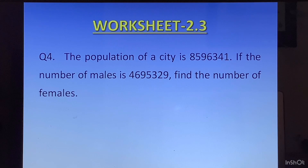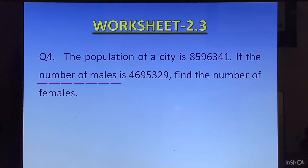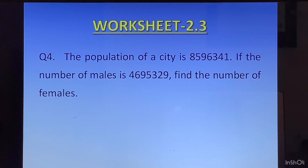Question 4: The population of a city is 8,596,341. If the number of males is 4,695,329, find the number of females. They have given us the population of the city and the number of males, and we have to find the number of females. The statements for this question will be: population of the city, number of males, and number of females. For number of females you will subtract and find the answer.